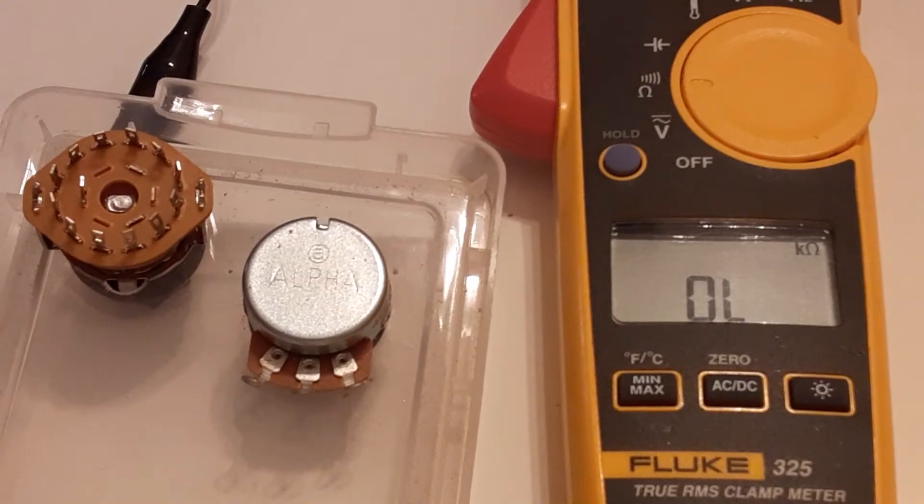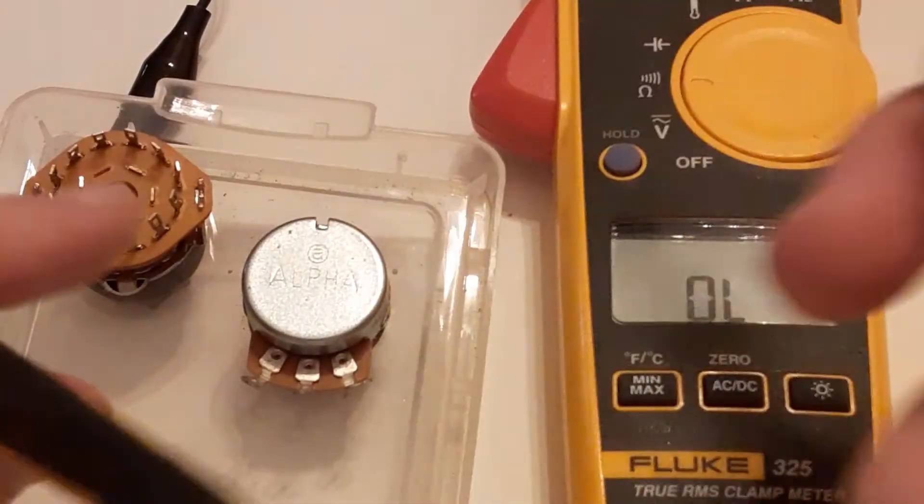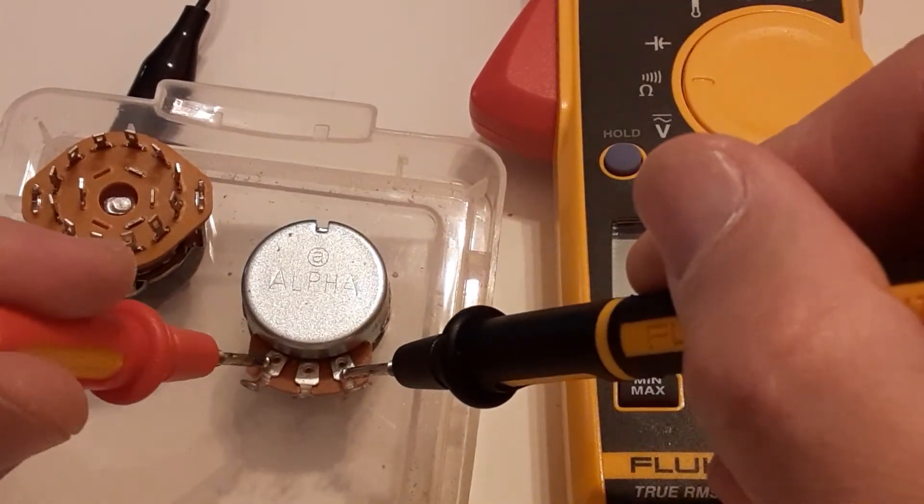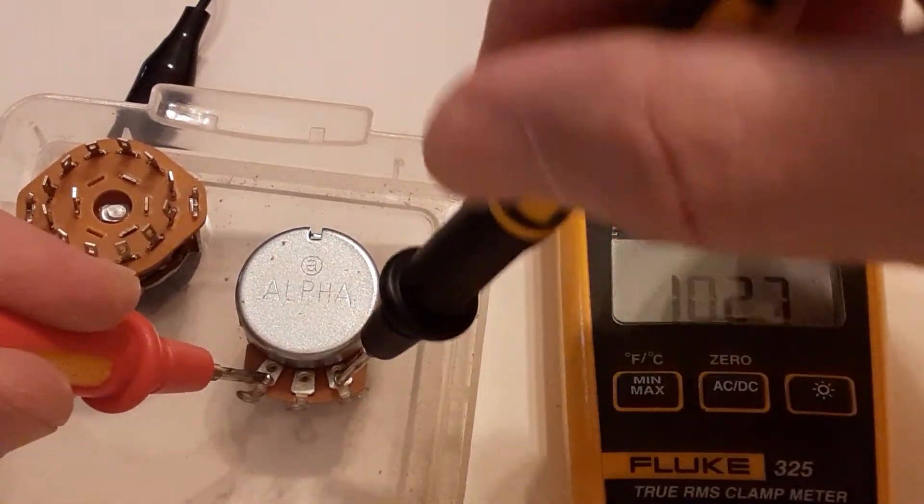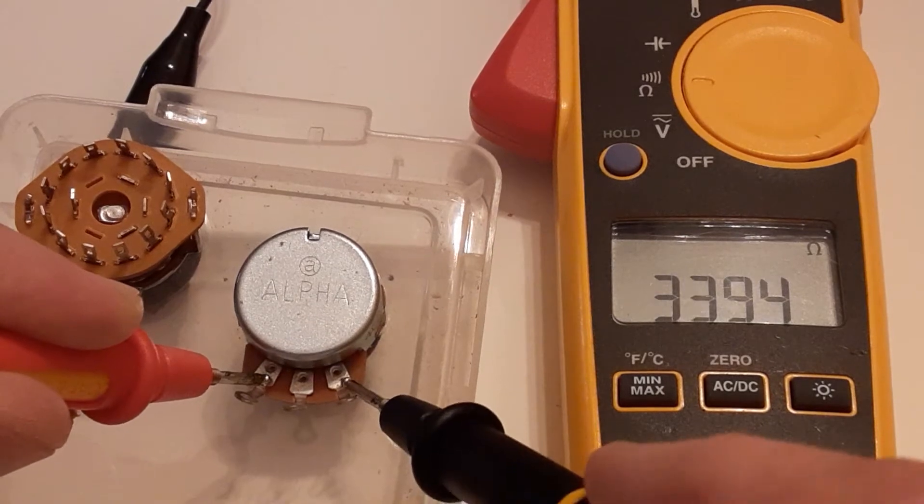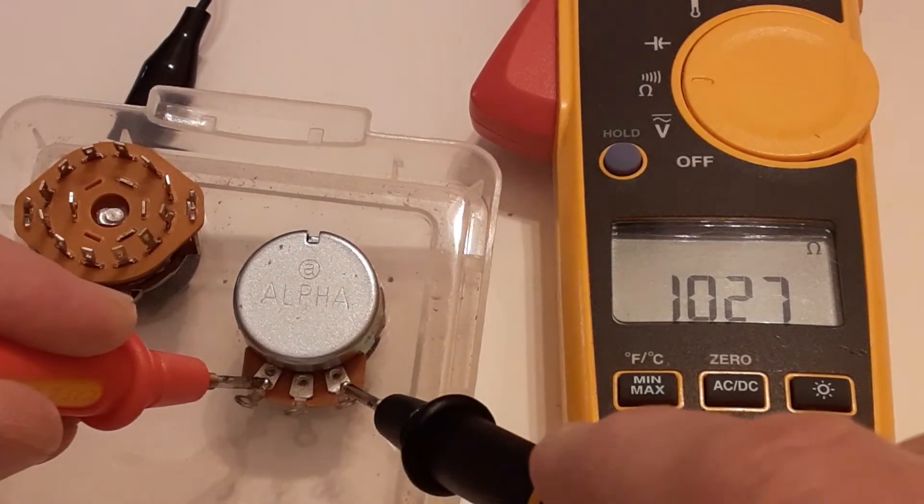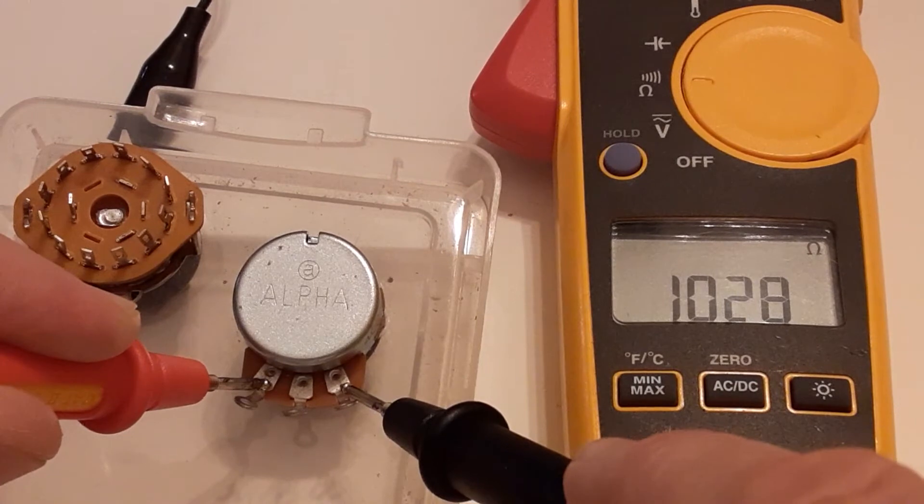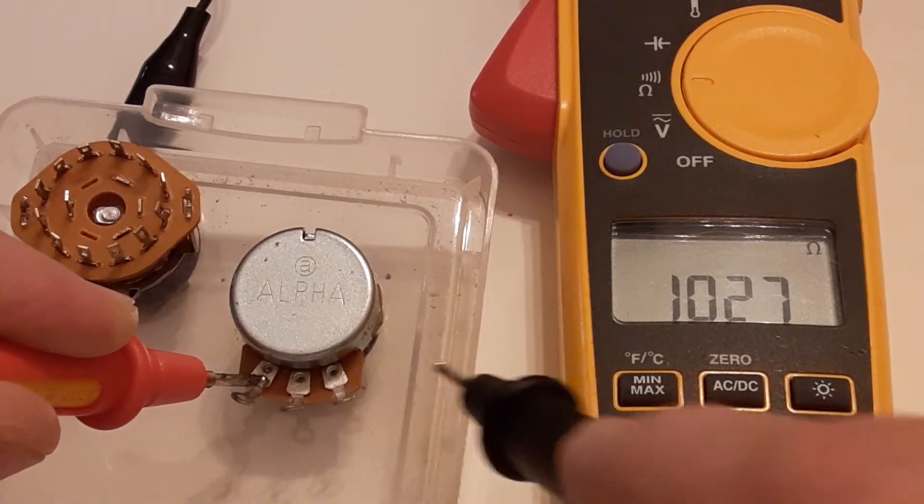So here it is. I put the probe across the outside, the two outside pins. And I get 1,027 ohms. This is a 1K pot. If I go across the center and one end, 1,030. That must be turned all the way one way. Let me turn the pot.